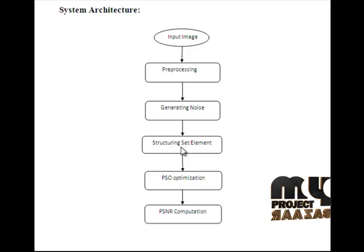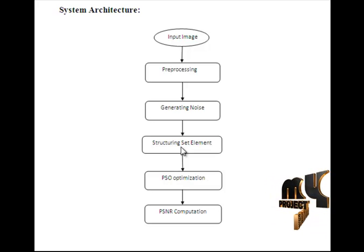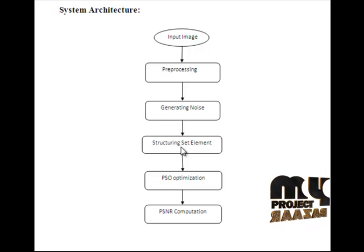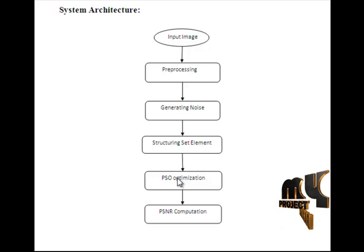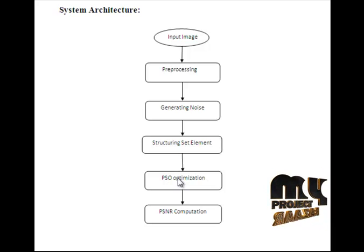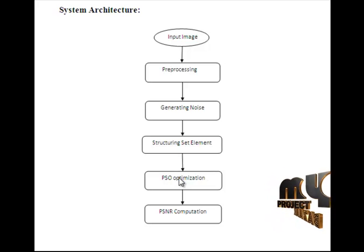To avoid the negative influence of the SE, we adapt a composition of zero square matrices where all values are zero. To get the SE size for different noise density situations, we use the PSO optimization algorithm to adaptively determine the SE size. After this process, it passes to the PSO optimization. PSO optimization is a computational method that optimizes a problem by iteratively trying to improve a candidate solution with regard to a given measure of quality.